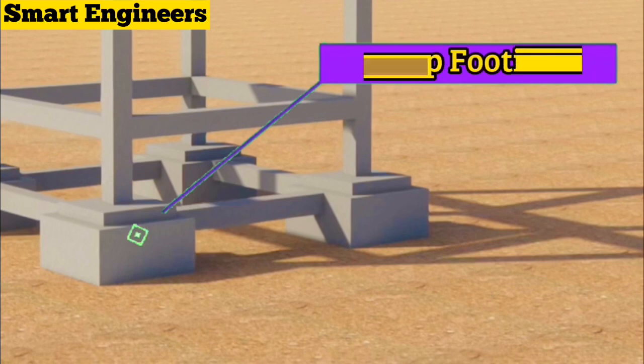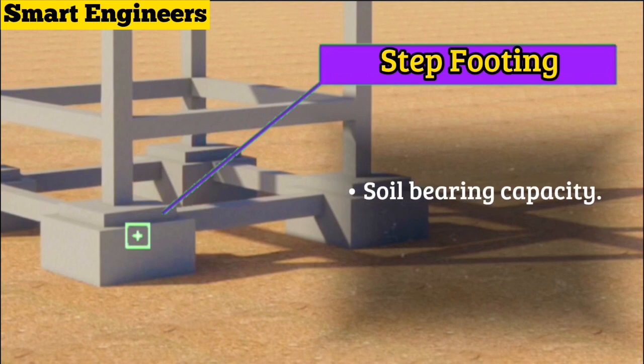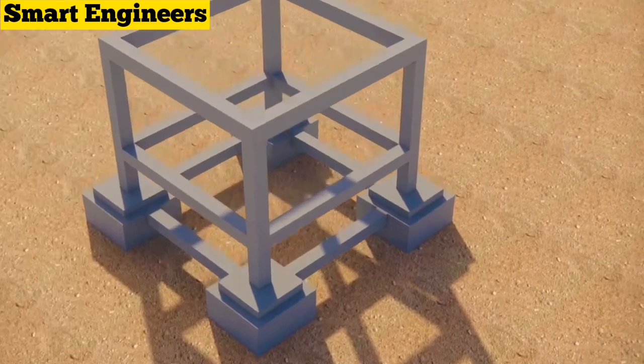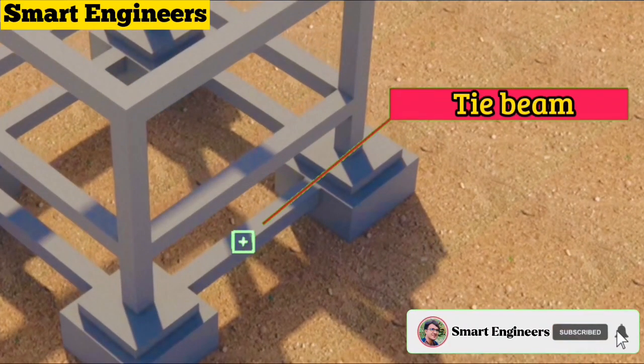...the step footing. You can see this is called step footing. The step footing size depends on the soil bearing capacity and also the structure load of a building. After that, you can see this is called tie beam.